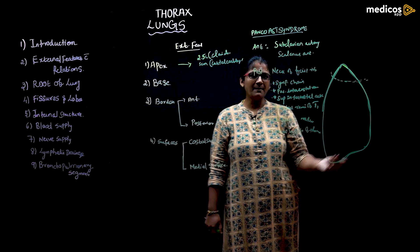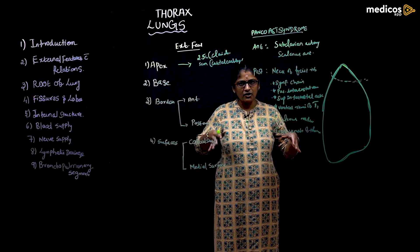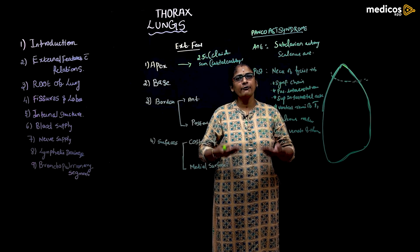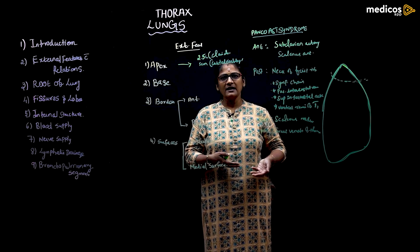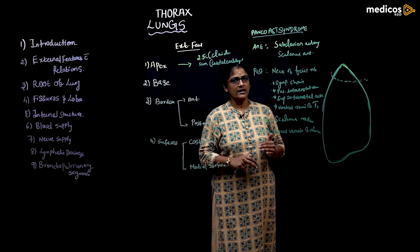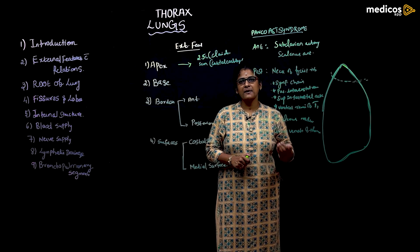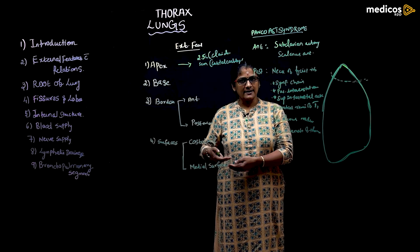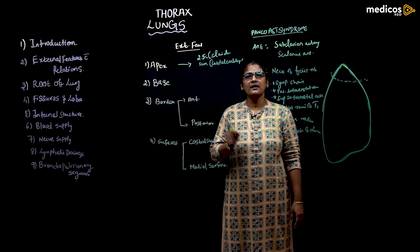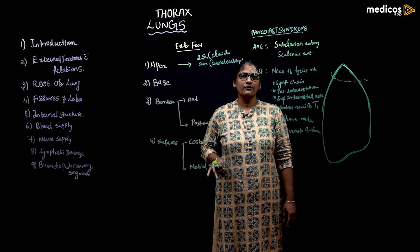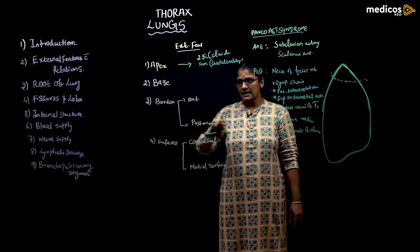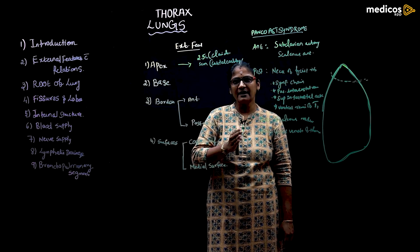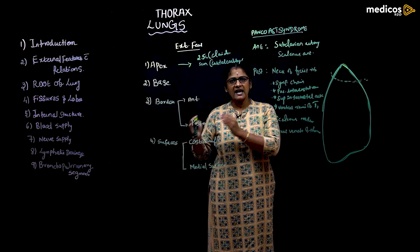Now for the base of the lung: the base is separated from the thorax by the right and left domes of the diaphragm. Under the right lung, the right dome of diaphragm separates the base from the liver. The left dome of the diaphragm separates the base of the left lung from the stomach and spleen.